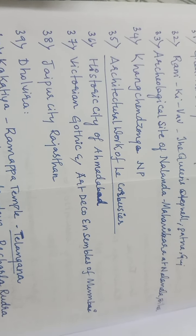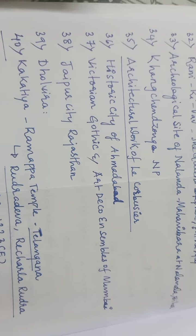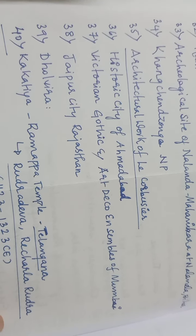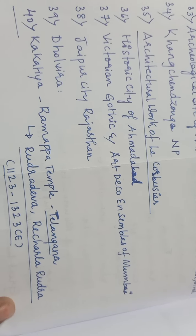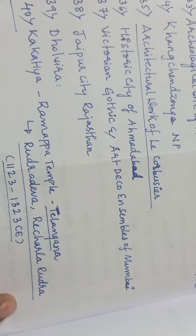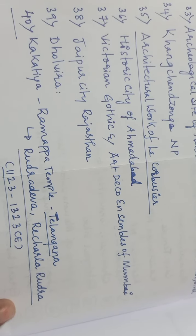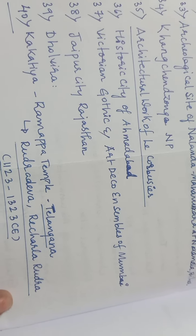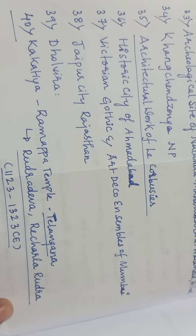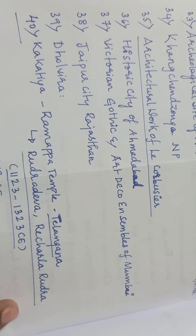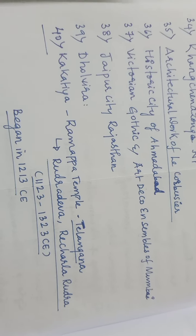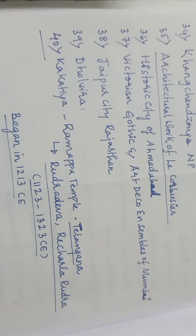The architectural work of Le Corbusier, historic city of Ahmedabad, the Victorian Gothic and Art Deco ensembles of Mumbai, and the Jaipur City which is in Rajasthan.